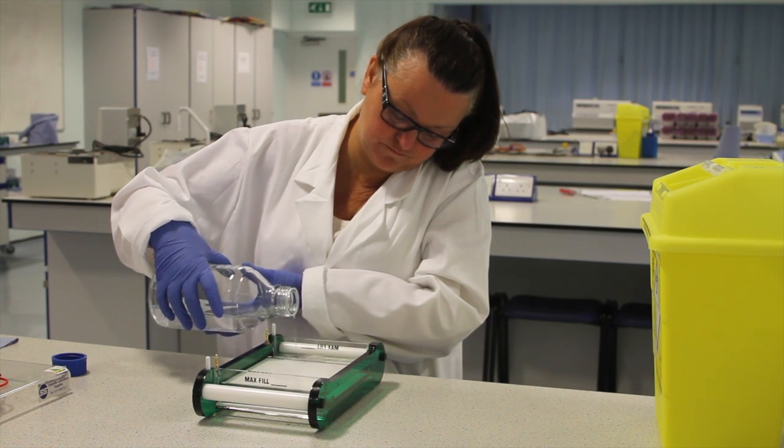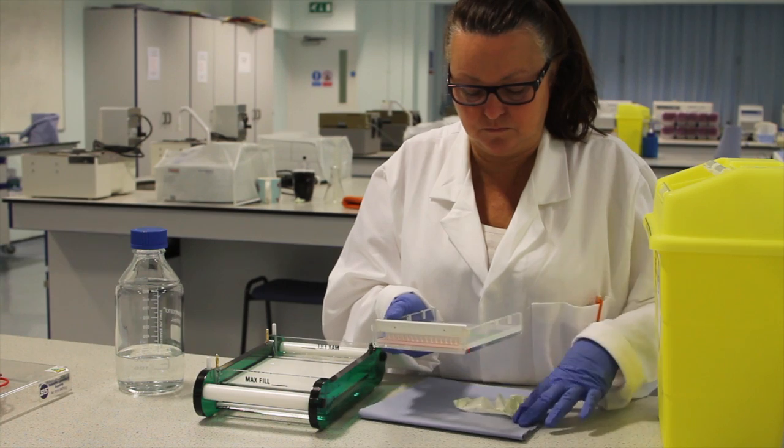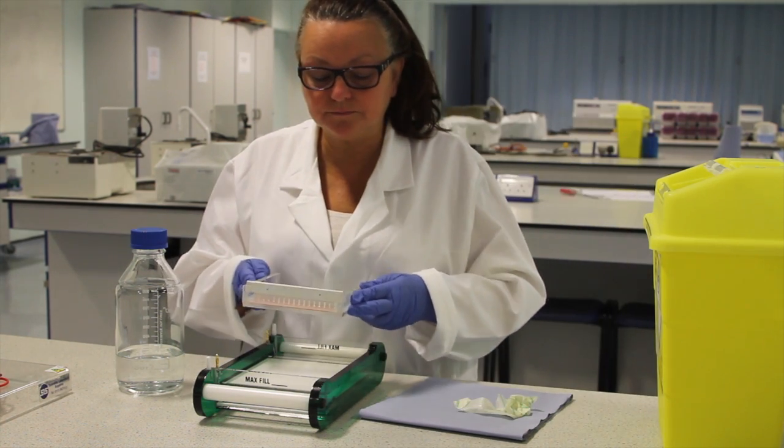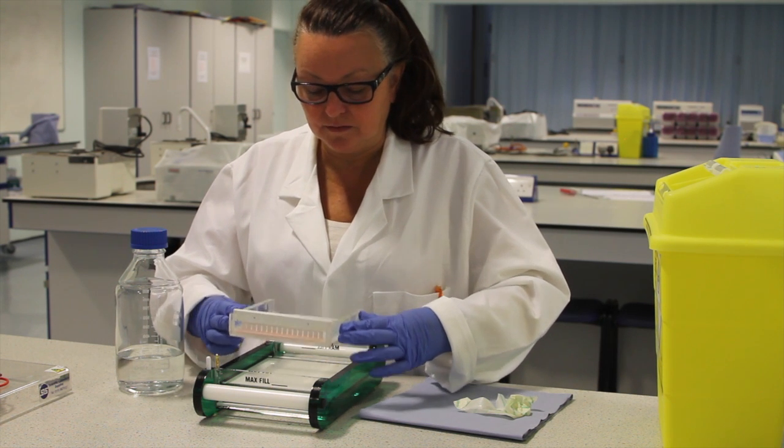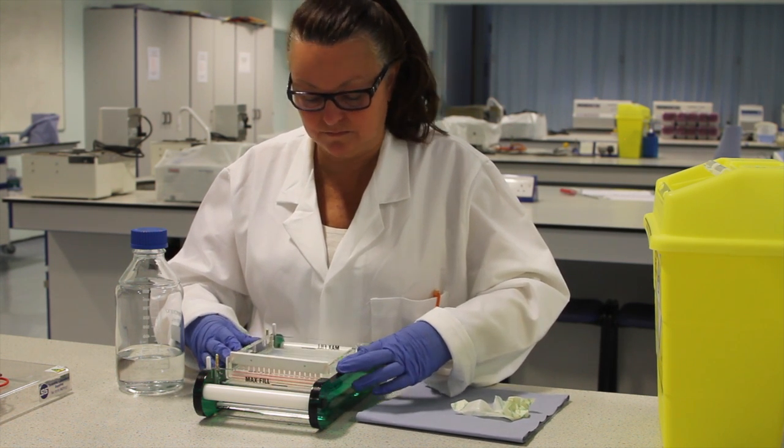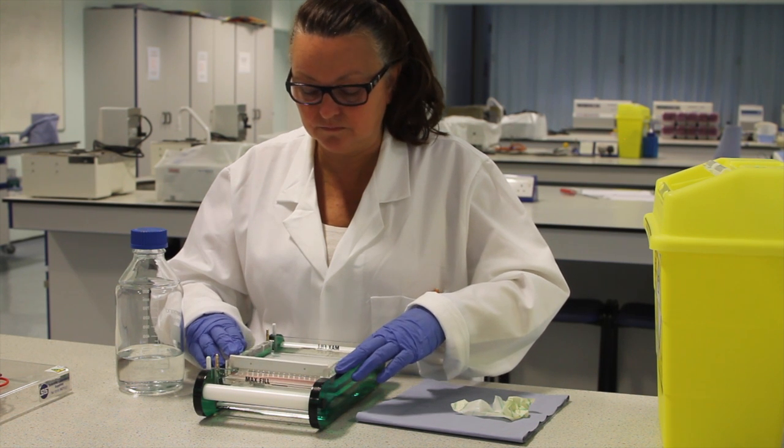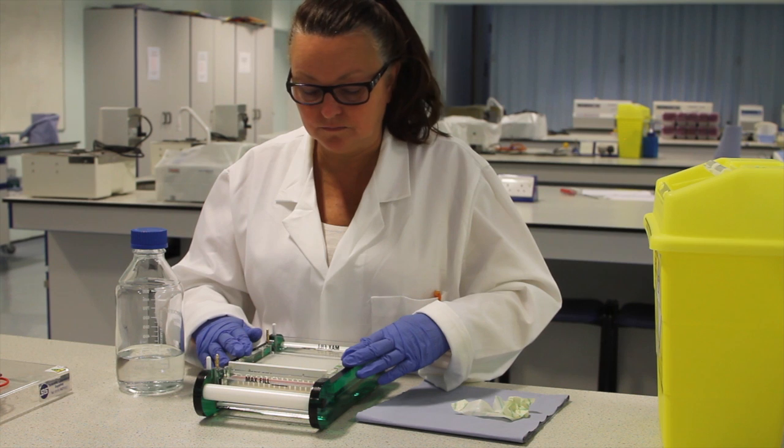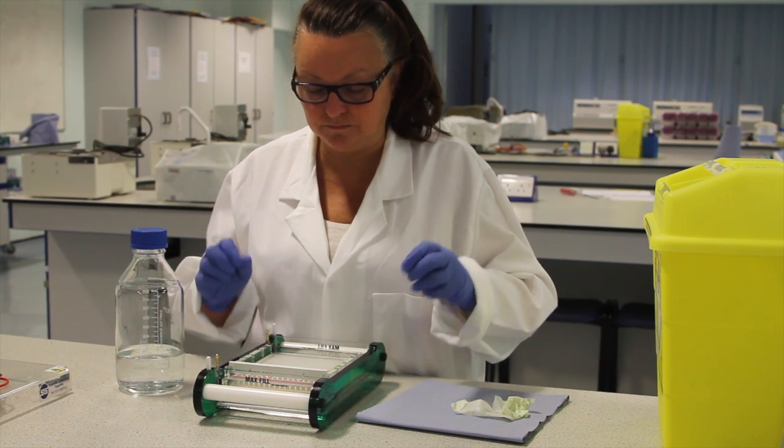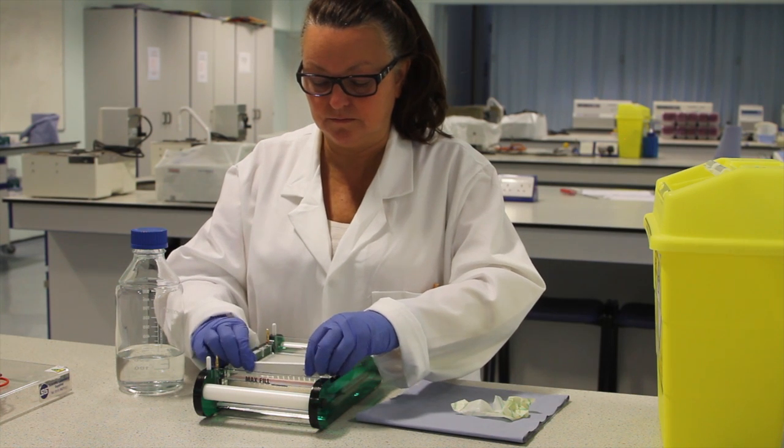Remove the tape and dispose of it in the ethidium bromide waste and then carefully place the gel in the tank. Top up with buffer if necessary. There should be a thin layer of liquid covering the surface of the gel. Remove the comb only when the gel is inside the tank.